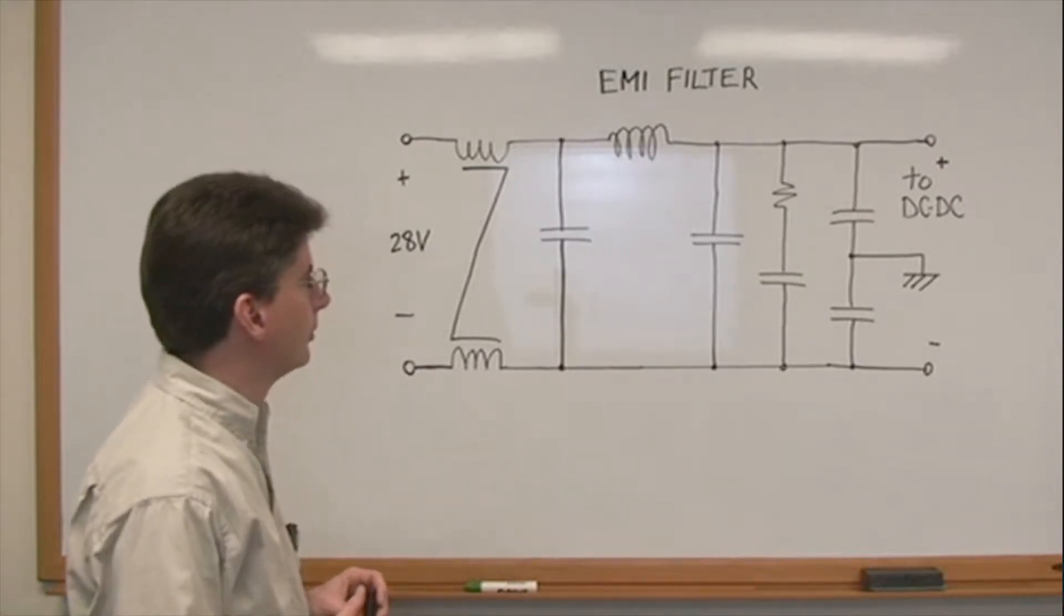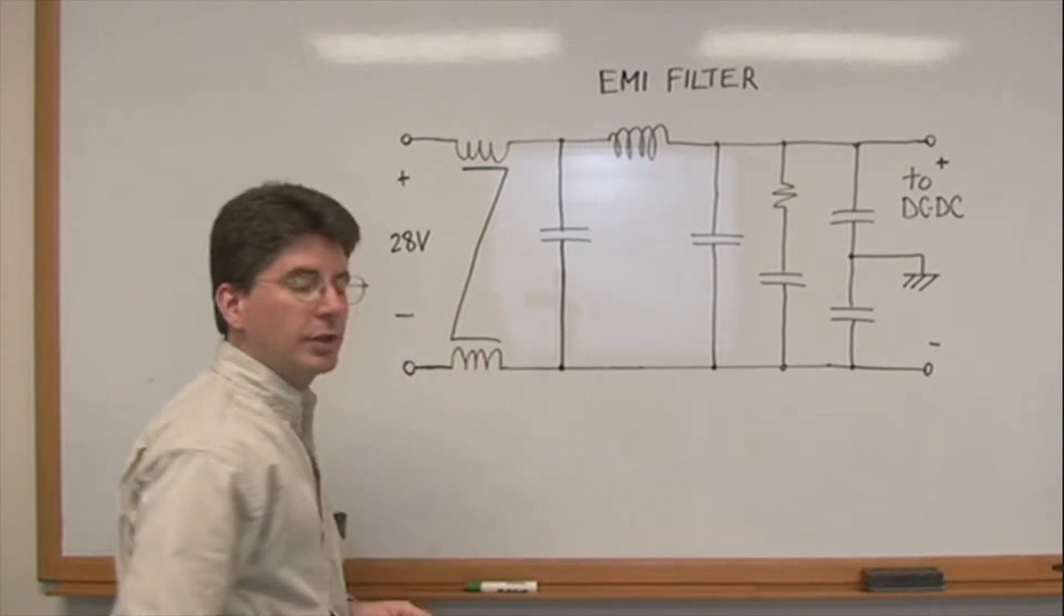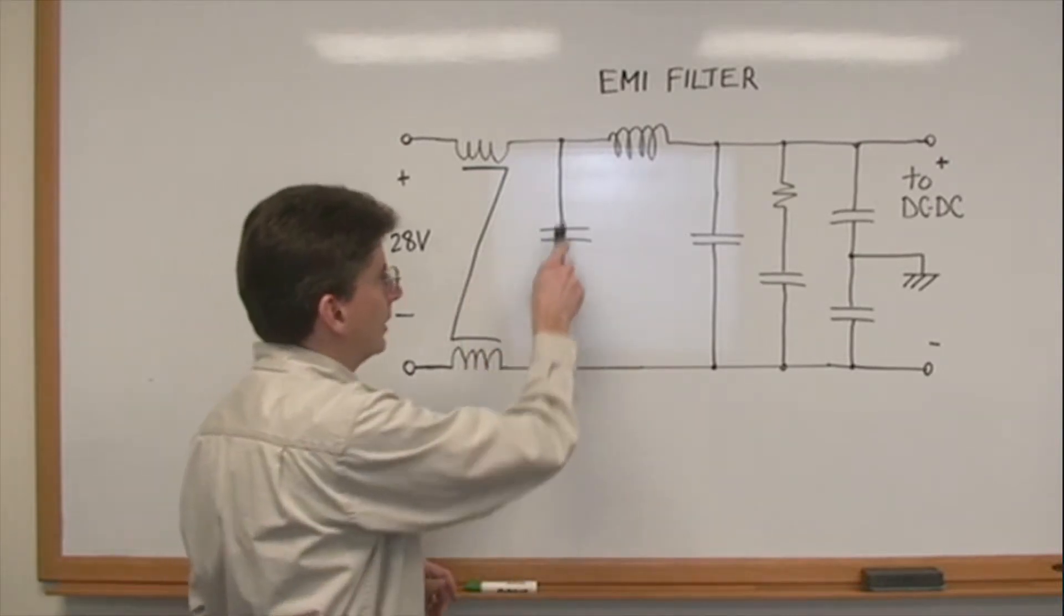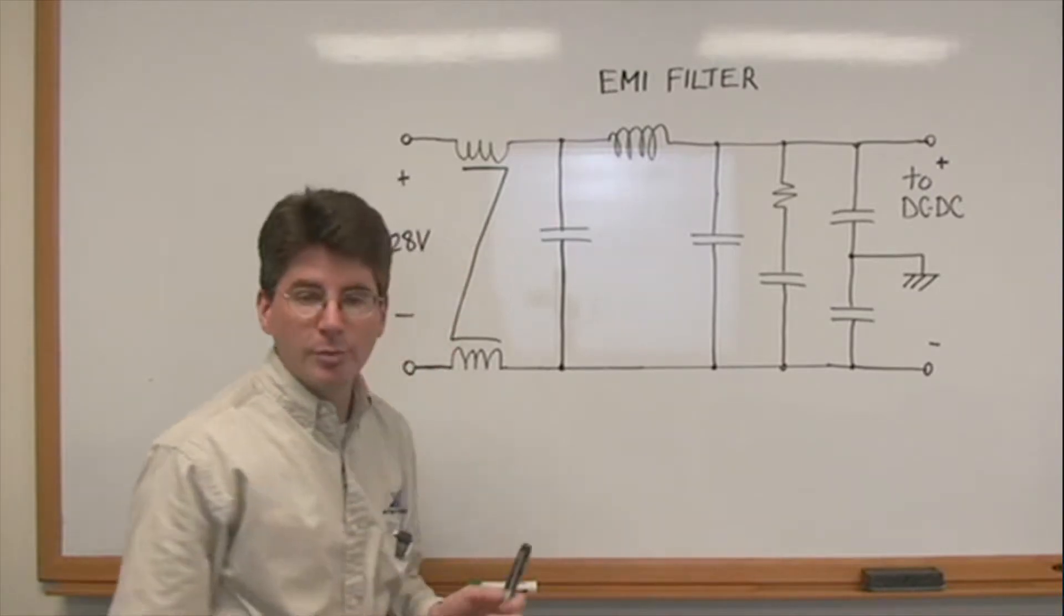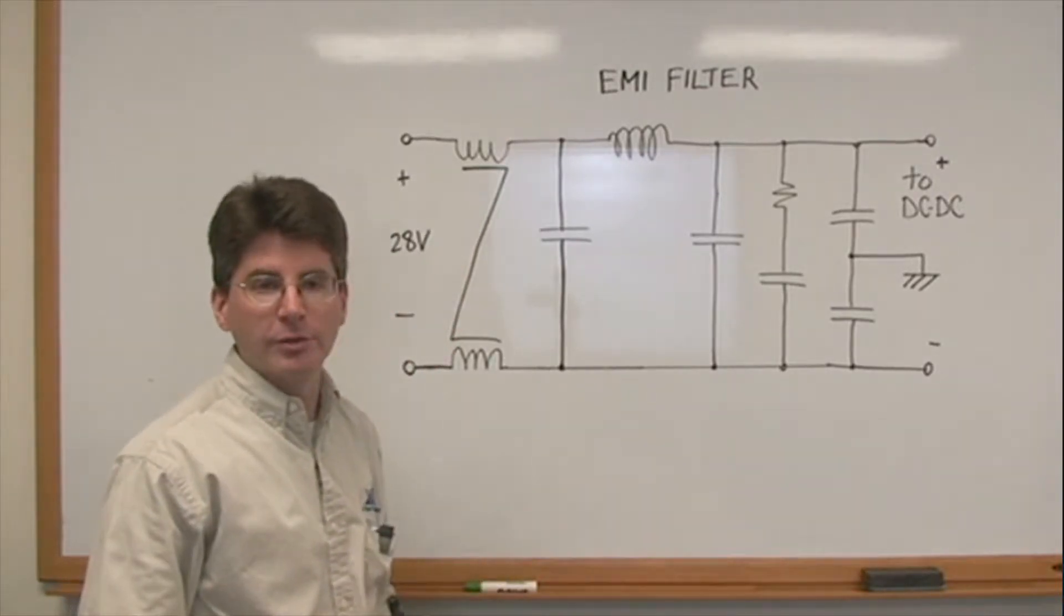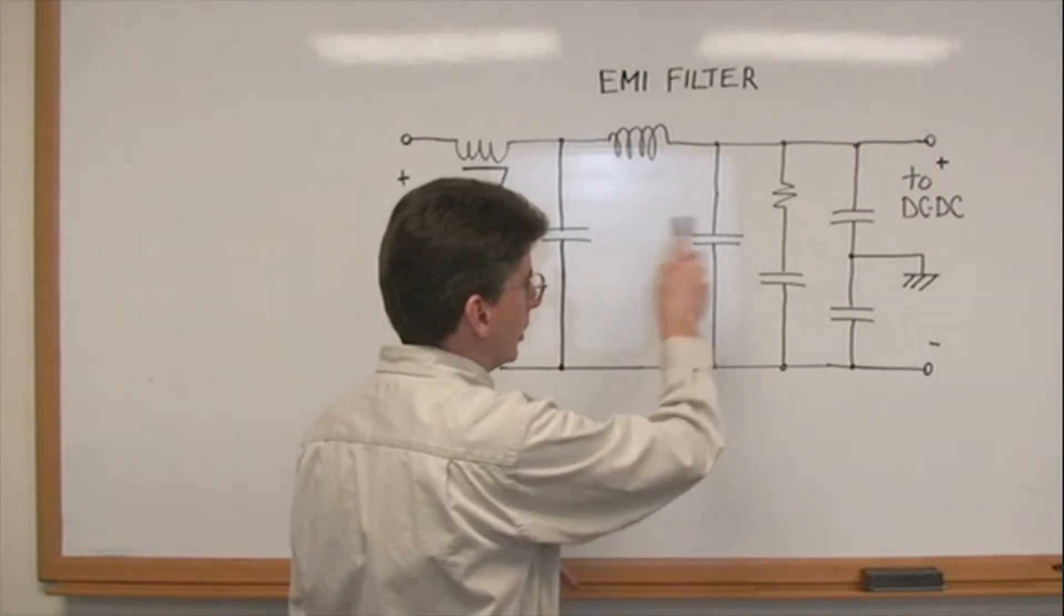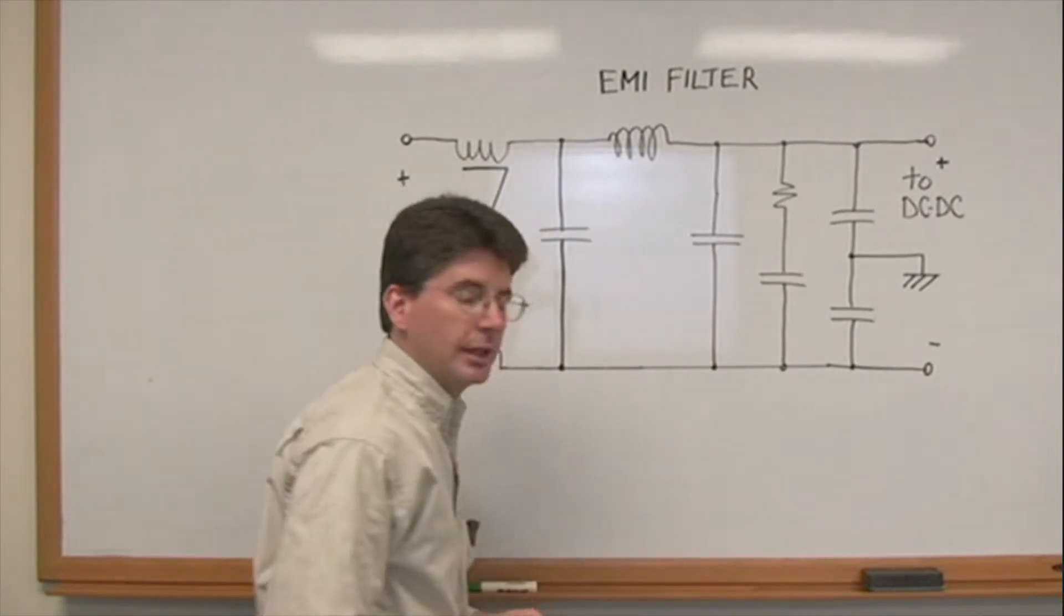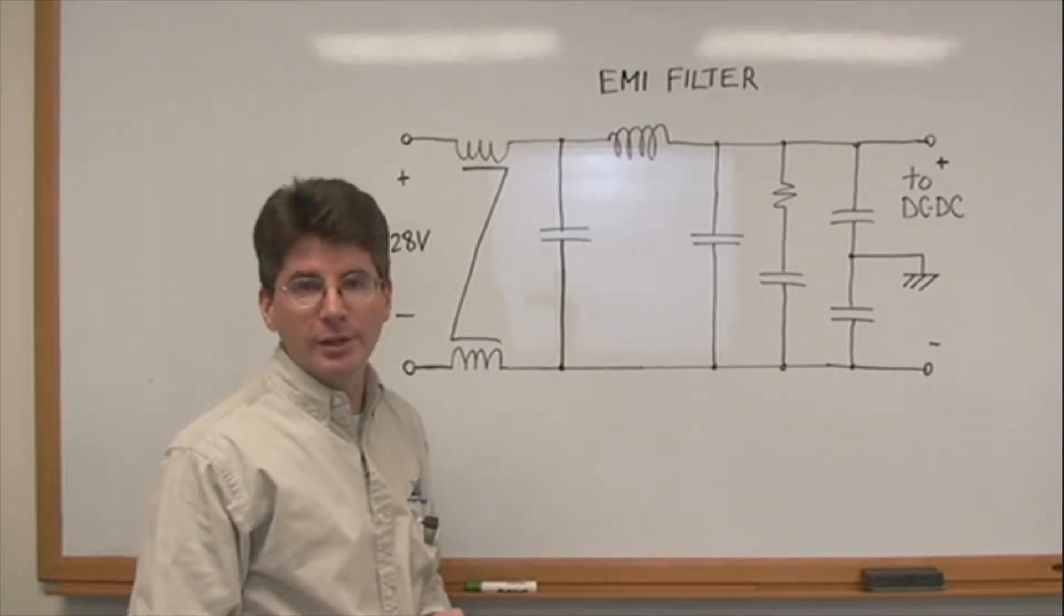For differential mode filtering, we have a two-stage LC. The leakage inductance of the common mode choke, this capacitor, differential inductor and this capacitor. That forms a two-stage LC filter. Corner frequency also around 40 kilohertz. For the differential mode, we also have this RC. This is important. This is a damping branch. It will eliminate any resonance, high-Q resonance in the EMI filter which can cause interactions with the DC-DC converter.